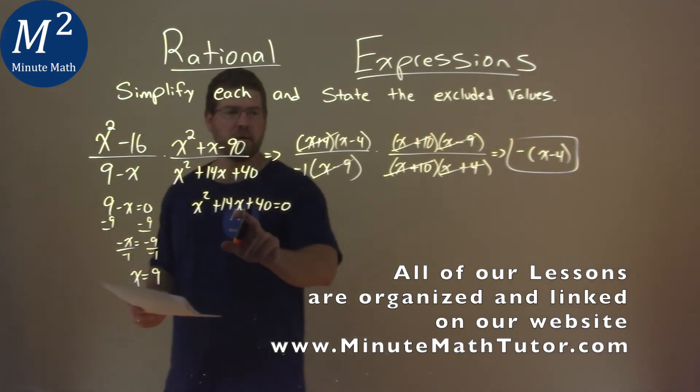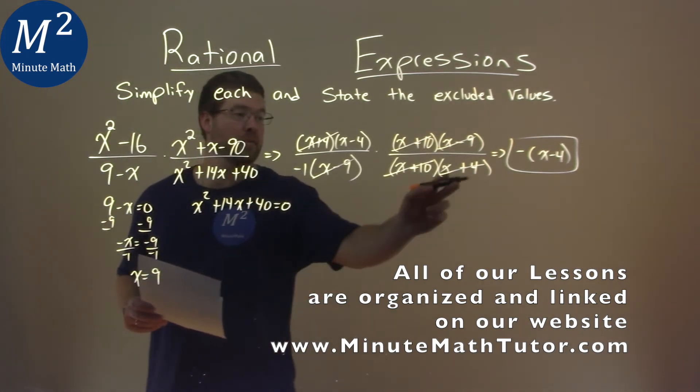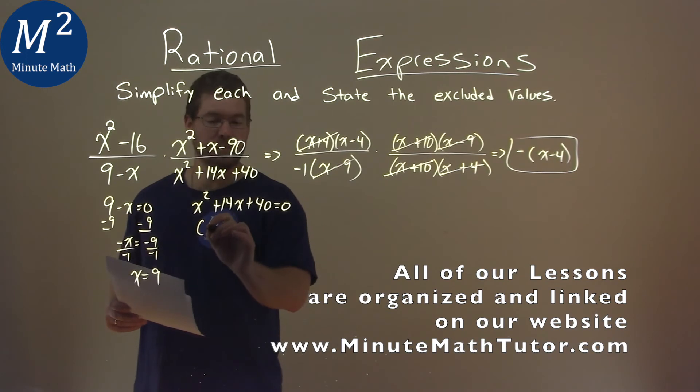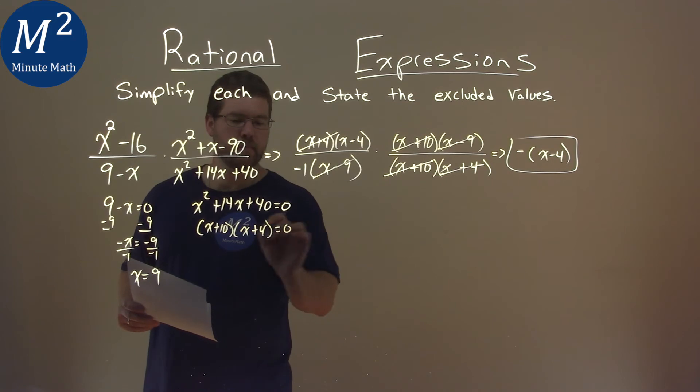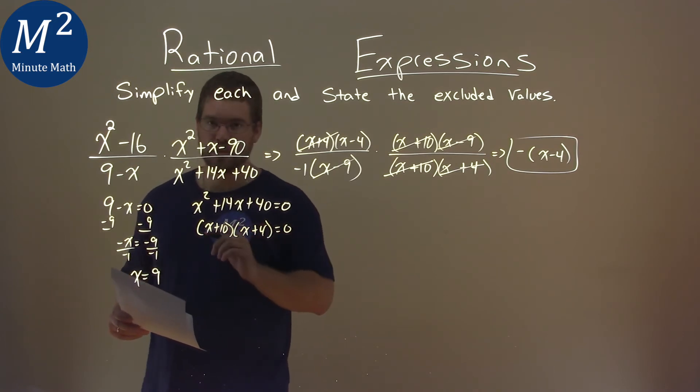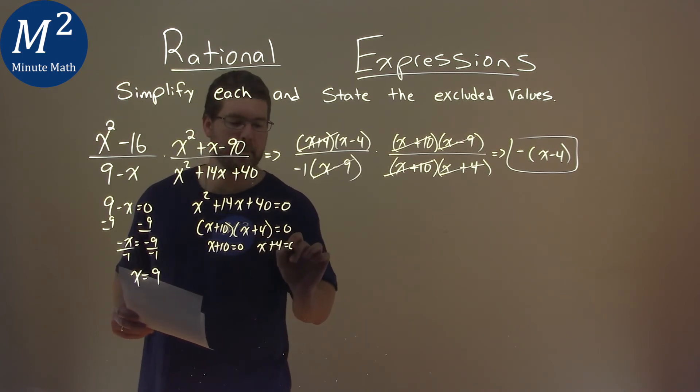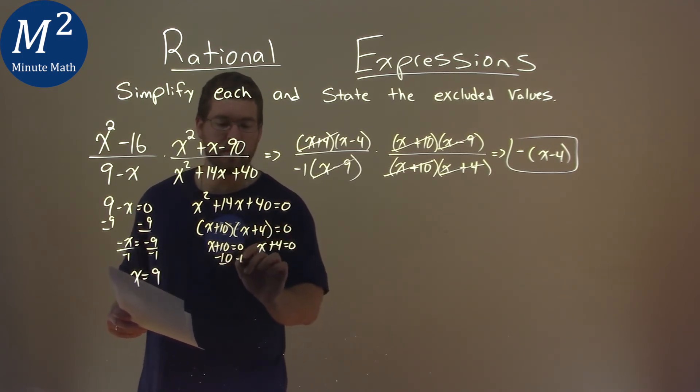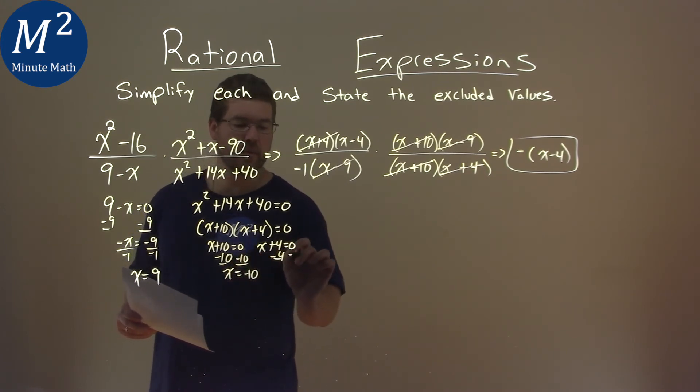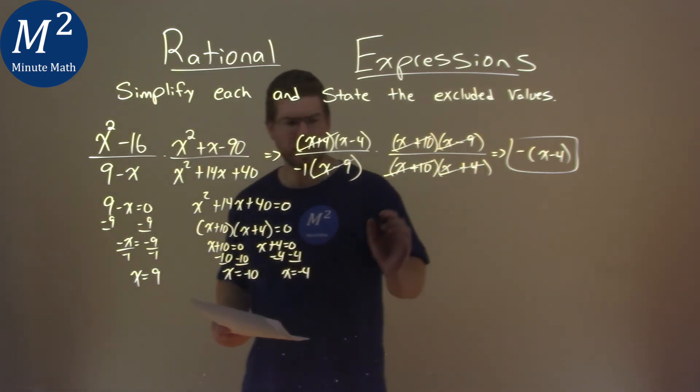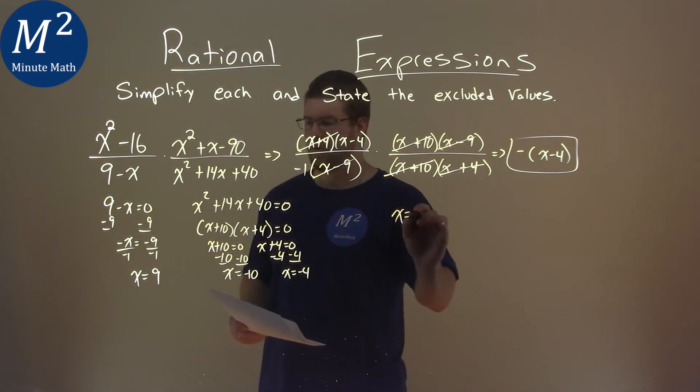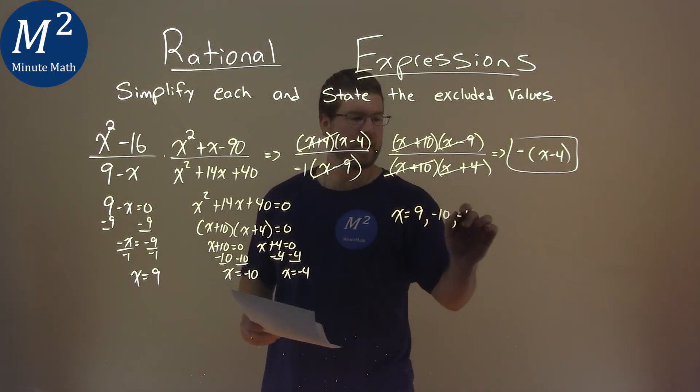Here, it's easier when it's factored. We already did that work. Let's use that: x plus 10 and x plus 4. We now can set both of these individually equal to 0. x plus 10 equals 0 and x plus 4 equal to 0. Solving, subtract 10 to both sides, and x equals negative 10. Subtract 4 to both sides, and x equals negative 4. And so my three excluded values are 9, negative 10, and negative 4.